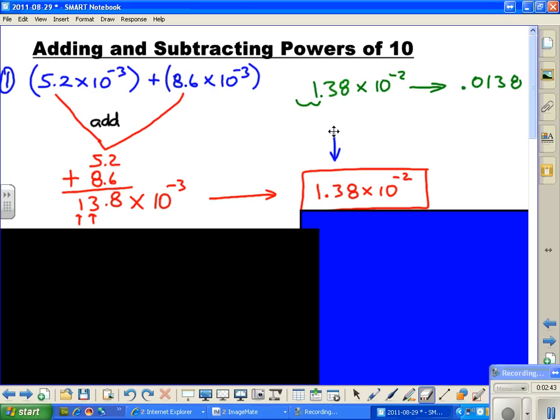Which gives us 0.0138 as our number. If we look at the original number that was not in scientific notation, we had 13.8 times 10 to the minus 3. We're going to have to start at the decimal in a different place: 1, 2, and 3.